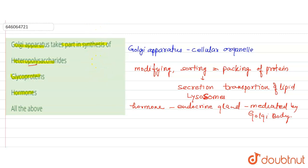So we can say that Golgi apparatus is responsible for the synthesis of heteropolysaccharide, glycoprotein, and hormones. So the correct answer to this question will be all of the above.